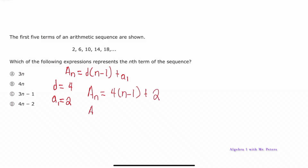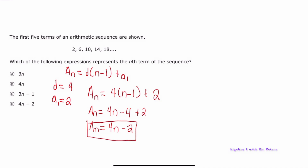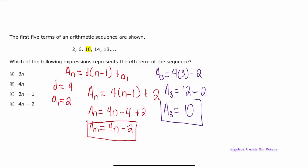Then we simplify: a_n = 4n − 4 + 2, so the equation we're going to use is 4n − 2. If we wanted to find the third term in the sequence we would substitute and simplify: 4 times 3 minus 2 gives us 12 − 2, which equals 10. We double-check the sequence and the third term is indeed 10, confirming that 4n − 2 is the correct equation.